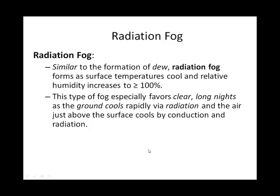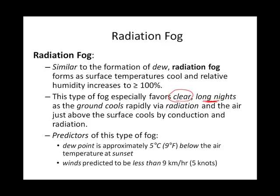Surface temperatures may cool to the dew point temperature, forming radiation fog. Nights that favor radiation fog need to be long — several hours of nighttime — and clear. Clear nights are required because clouds would bounce back the energy the Earth is trying to re-radiate. The air also needs to be relatively moist, with the dew point within about nine degrees of the temperature at sunset, and there can't be too much wind.